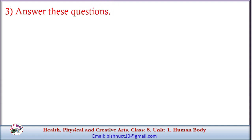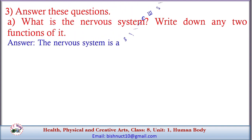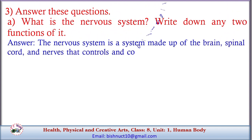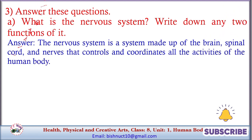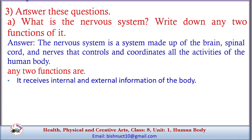Answer these questions. A. What is the nervous system? Write down any two functions of it. Answer: The nervous system is a system made up of the brain, spinal cord, and nerves that controls and coordinates all the activities of the human body. Any two functions: it receives internal and external information of the body, and leads the information received to be processed.